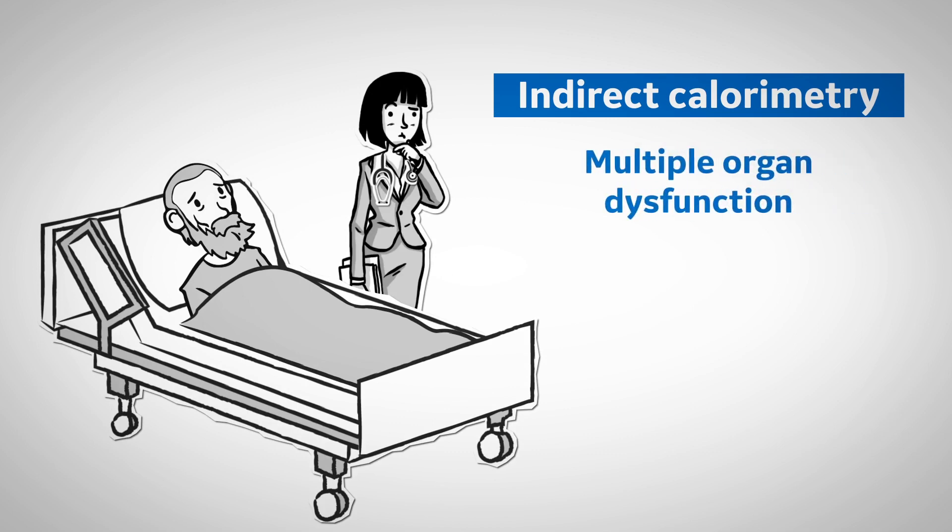He has multiple organ dysfunction, altered fluid status from the kidney issues, and then of course there's the amputation. So honestly, there's a lot going on behind the scenes that you would fail to account for by simply using predictive equations.